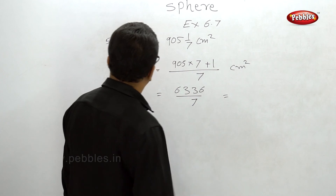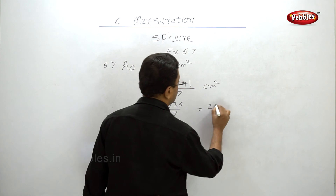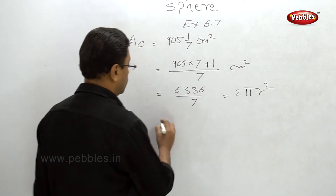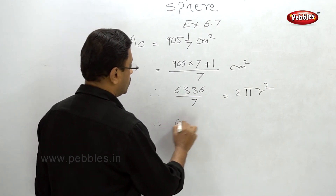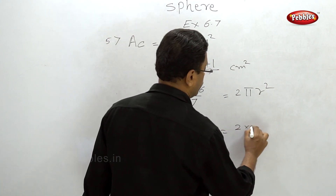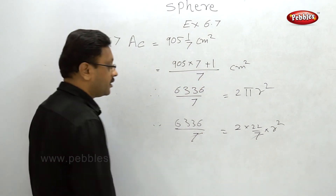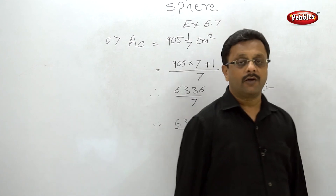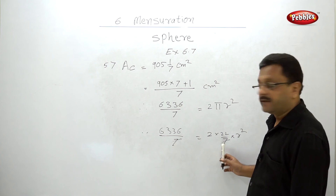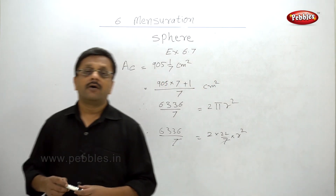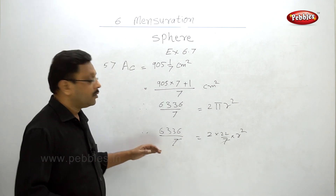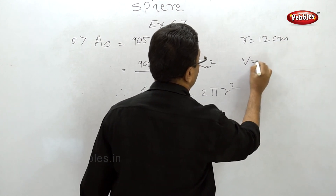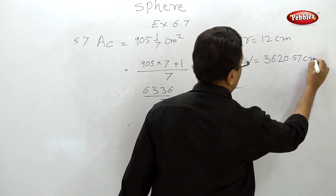Use the formula: curved surface area of hemisphere = 2πr². With π = 22/7: 6336/7 = 2 × (22/7) × r². The 7 cancels, then divide 6336 by 44 to get r², and take the square root to find r. Please pause your video and finish this calculation. The answer is r = 12 cm, and you can then substitute into the volume formula to get the volume in cm³.